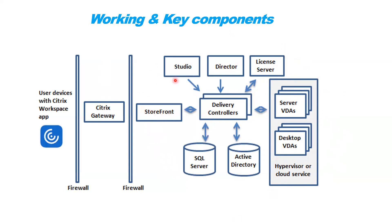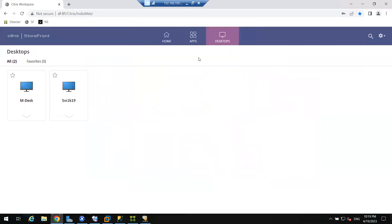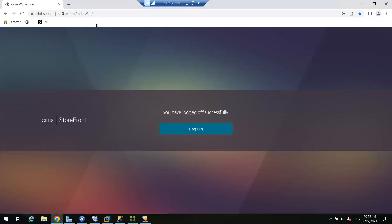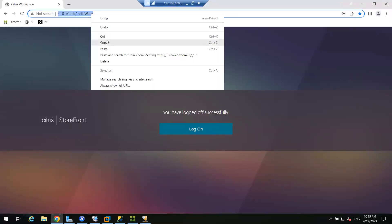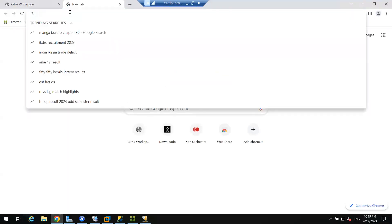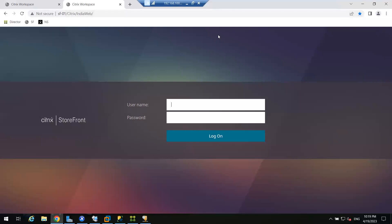Now how it works - we have allocated a new virtual machine to the end user. We ask the user to open a web browser and enter our storefront URL, like www.whatever.com. Once the user enters that URL, it will load a web page. Now I am acting as an end user - someone gave me that URL and I open it. This is the web page that opens.